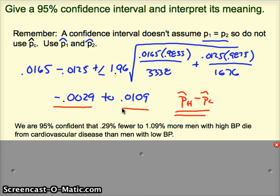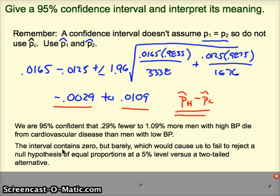Now, recall we failed to reject the null. The reason we did that is because 0 is in this interval, so it's unclear whether the death rate's higher or lower, even though 0 is close to the left edge of this confidence interval. So the interval contains 0, barely, but that would cause us to fail to reject the null hypothesis of equal proportions. Because if our null is that the proportions are equal, our null might also be that the difference is 0, well, 0 is in the confidence interval. So we're not surprised by that, so we'd fail to reject the null.